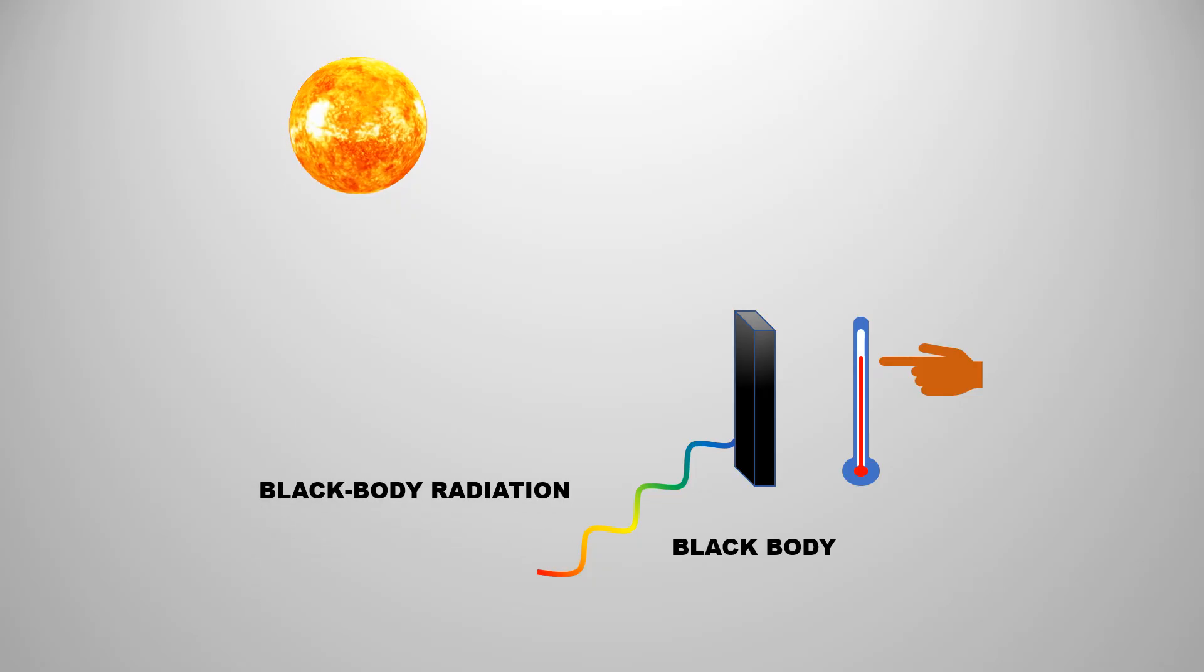Here, it is to be kept in mind that this is not only done by the black body. Rather, when any object absorbs radiation, it starts emitting radiation itself due to the temperature being increased. So, any object emits radiation due to the increment in temperature. Then, this radiation is called black body radiation.